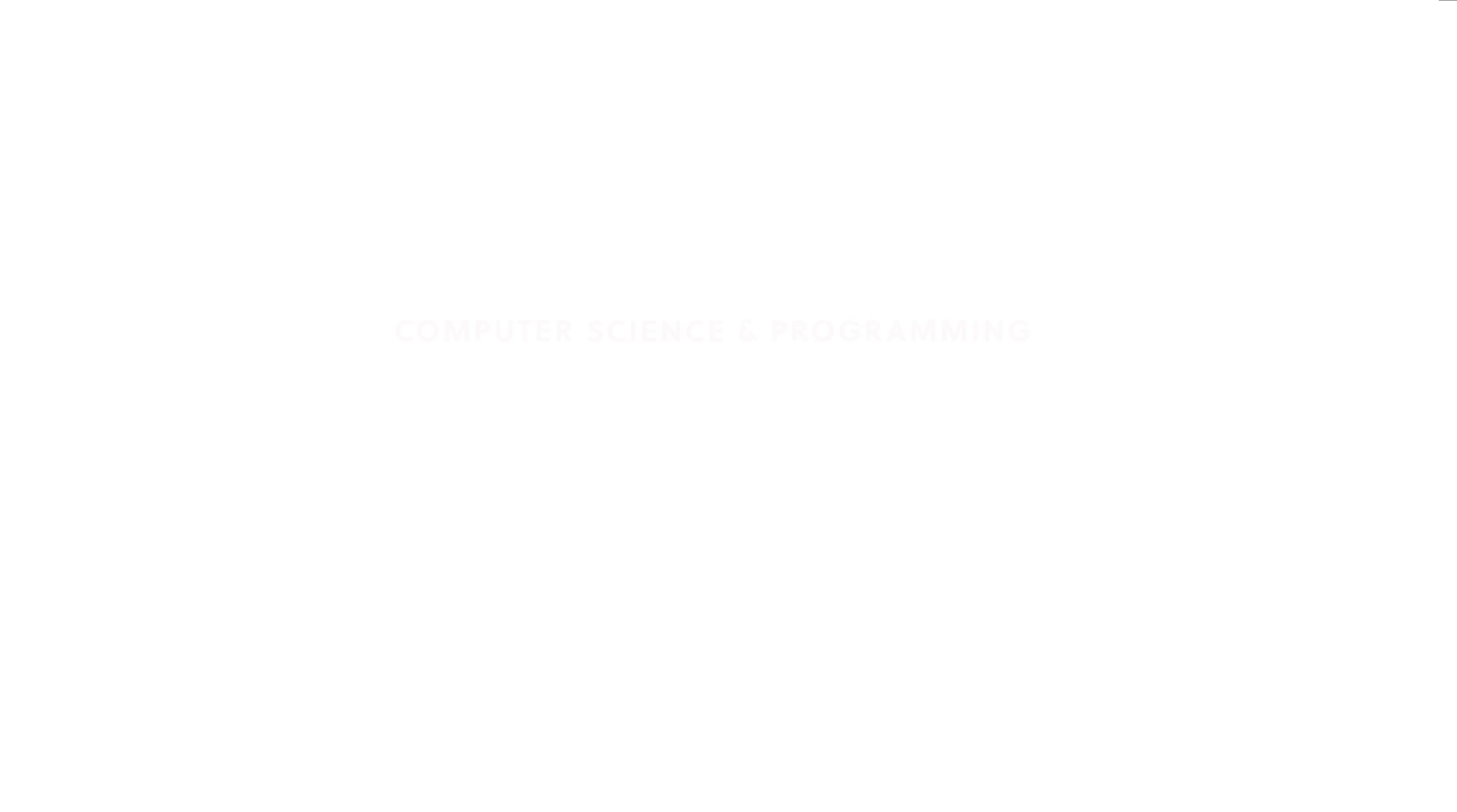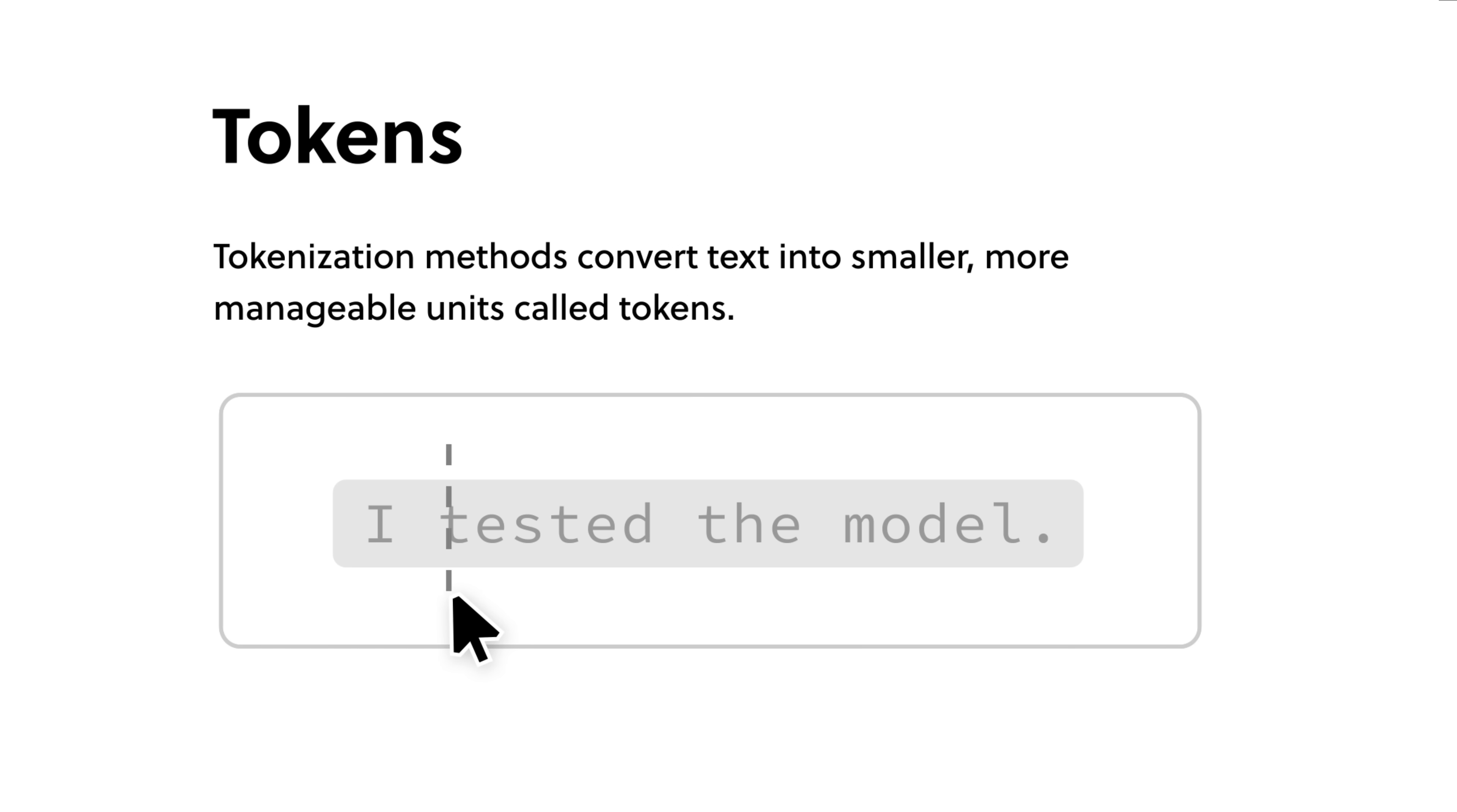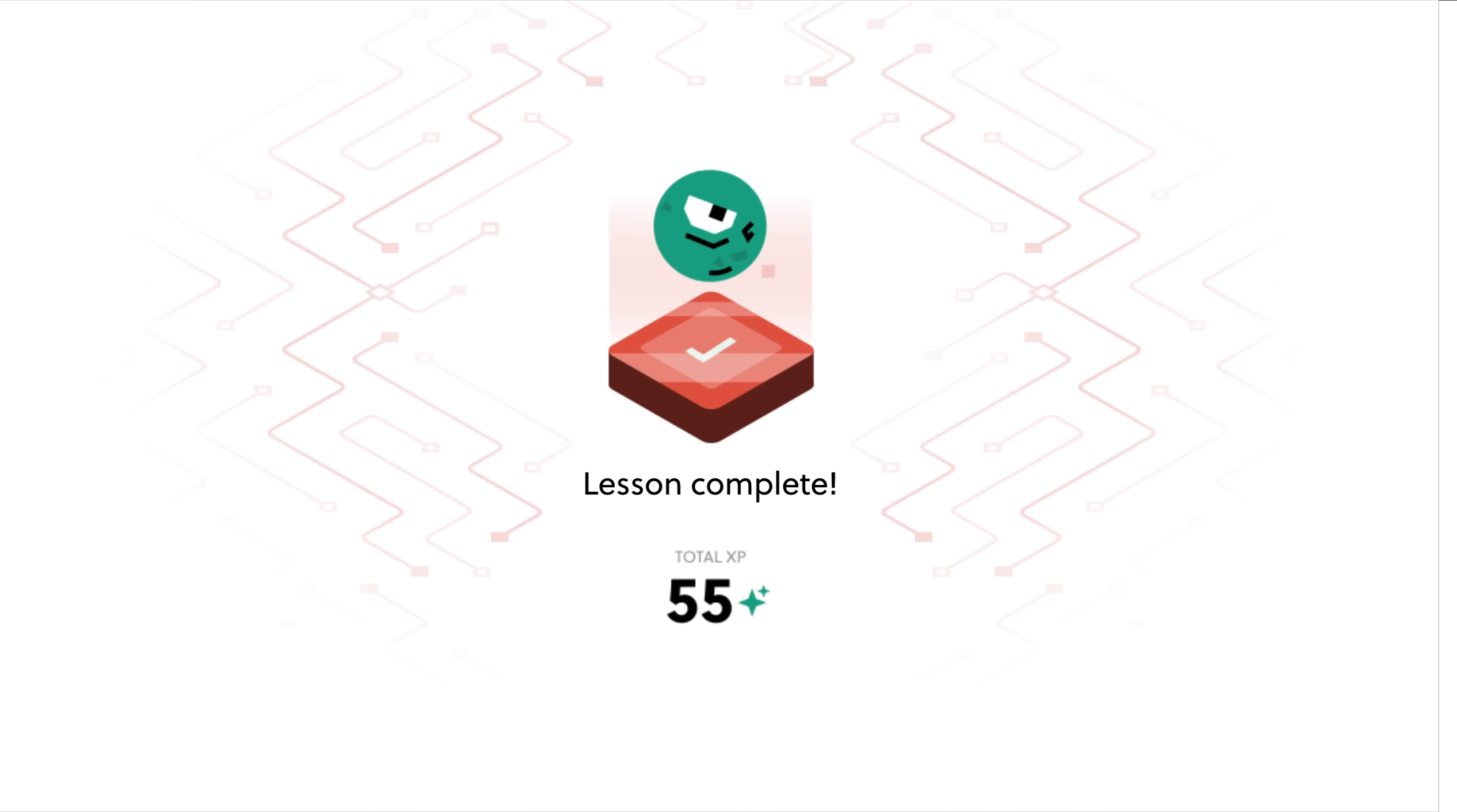Recently, I found their new series on how LLMs work particularly intriguing. This series breaks down tools like ChatGPT from first principles, providing hands-on lessons where you interact directly with real language models. You'll discover how these models predict the next word, learn to customize their outputs, and grasp the significance of training data. The course is designed to make complex concepts accessible, fostering an environment that encourages exploration and experimentation. I firmly believe that active engagement is key to mastering computer science concepts, and Brilliant's approach exemplifies this philosophy.